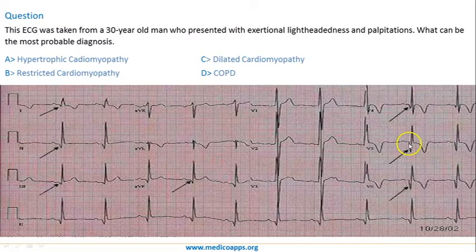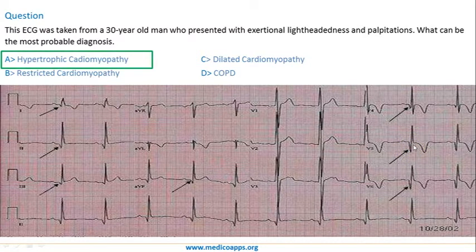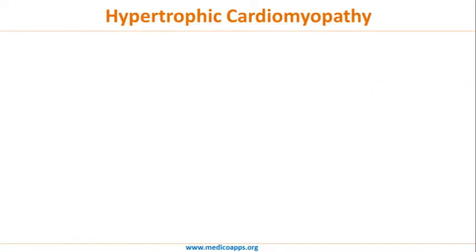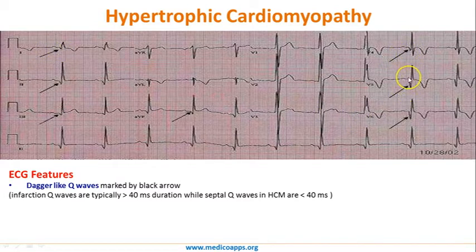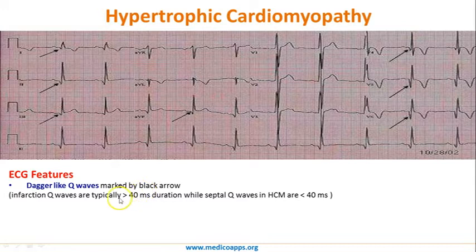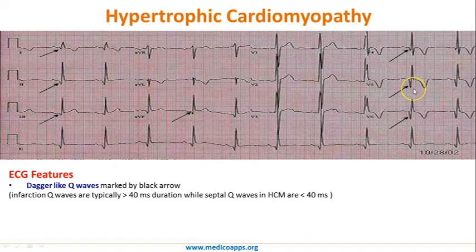These Q waves are characteristic of hypertrophic cardiomyopathy. Now we know that dagger-like Q waves are marked by the black arrow — they almost look like a dagger. Pathological Q waves are also seen in infarction, but they are relatively broader. In hypertrophic cardiomyopathy they are narrow and deep, which almost looks like a dagger.